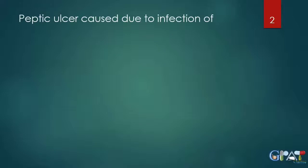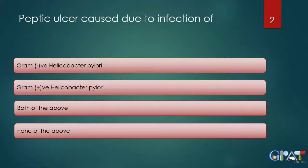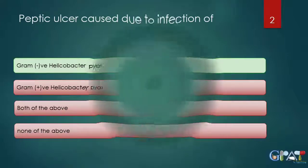The first question is: peptic ulcer is caused due to the infection of which organism? The options are gram-negative Helicobacter pylori, gram-positive Helicobacter pylori, both of the above, or none of the above. Helicobacter pylori is found in gram-negative form and does not have a gram-positive form. Hence the answer is gram-negative Helicobacter pylori.